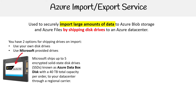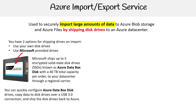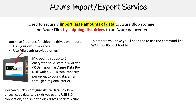You can ship up to 40 terabytes per order to your data center through a regional carrier. If you need beyond 40 terabytes, you have to make multiple orders. You can quickly configure the Azure Data Box Disk drives, copy the data to the disk drives using a USB 3.0 connection, and then ship it right back to Azure.